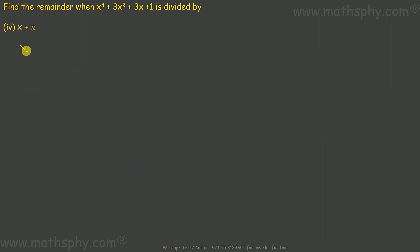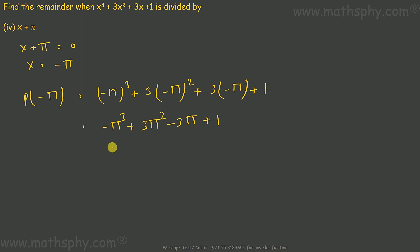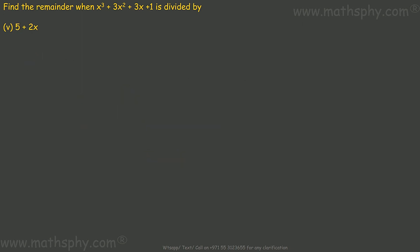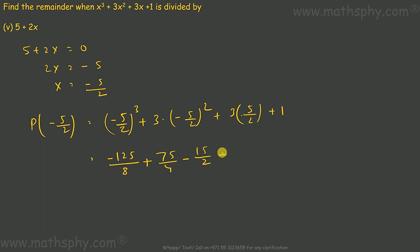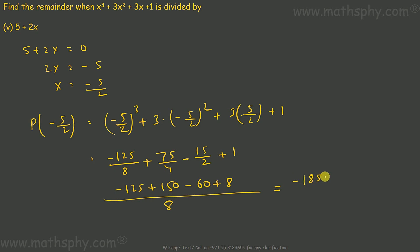For the fourth divisor, x + π: its zero is x = −π. Substituting gives remainder −π³ + 3π² − 3π + 1. For the fifth divisor, 5 + 2x: setting 5 + 2x = 0 gives x = −5/2. Substituting x = −5/2 gives: −125/8 − 60/8 + ... which simplifies to 27/8 as the remainder.